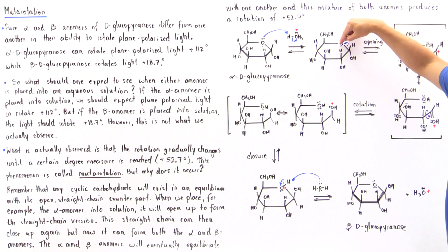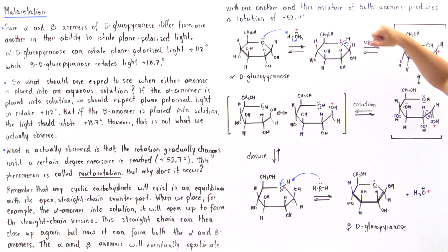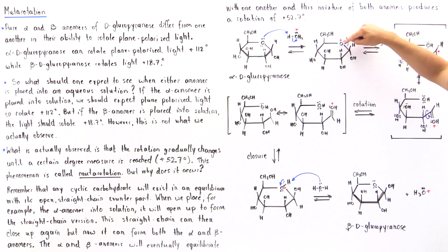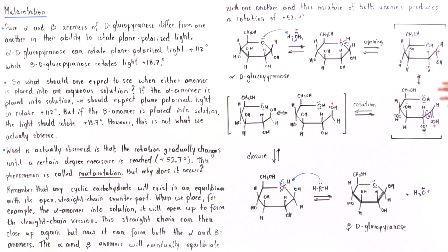Because this oxygen is protonated, this bond will become weak and can break off, with these two electrons on the bond being pulled onto this electronegative oxygen. We form this open straight-chain molecule — our sugar molecule in which we no longer have a cyclic structure, but a straight-chain structure containing an open carbocation intermediate.